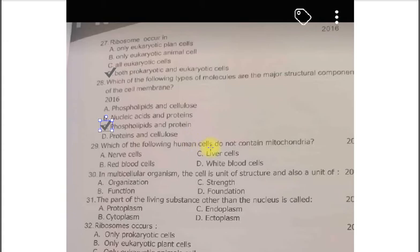Which are the following human cells do not contain mitochondria? The options are A. Nerve cell, B. Red blood cells, C. Liver cells, D. White blood cells. The correct one is the B. Red blood cells, RBCs. Next question.